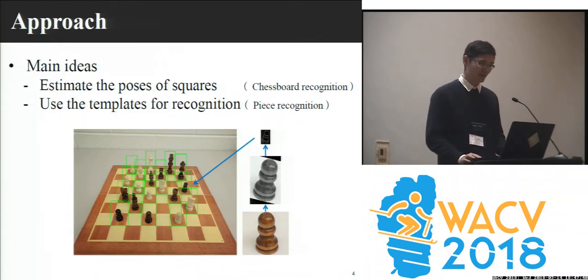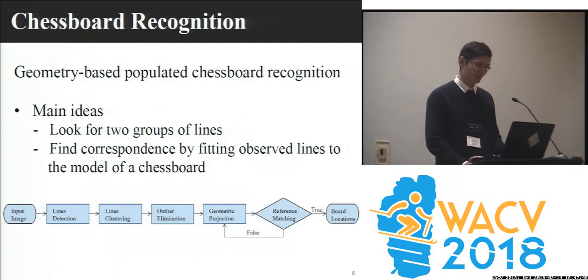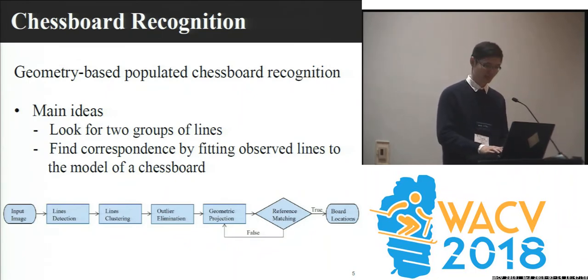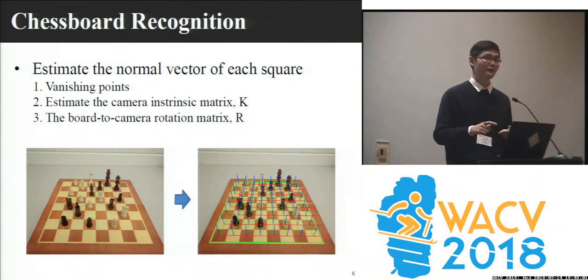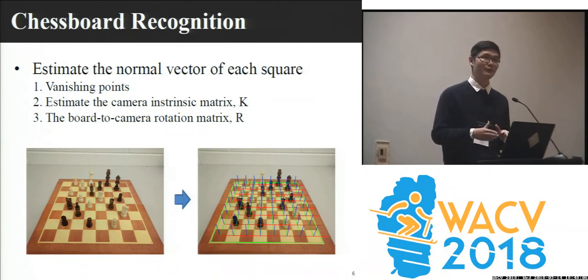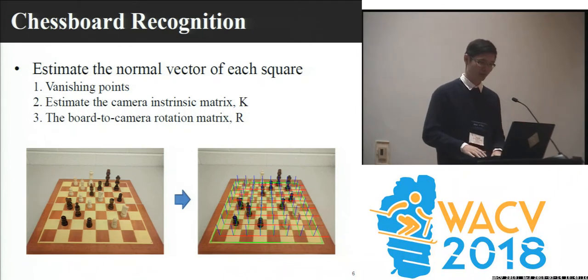The main idea is to first estimate the pose of squares through chessboard recognition, and then use the template for recognition. For chessboard recognition, we use a geometric-based chessboard recognition algorithm. The main idea is to find two groups of lines, then find correspondences by fitting the observed lines to the model of a chessboard. After that, we find the four corner points of the chessboard, and using that we can find the vanishing point of the chessboard boundary. We can estimate the camera intrinsic matrix and rotation matrix, and with all those matrices we can estimate the normal vector of each square.